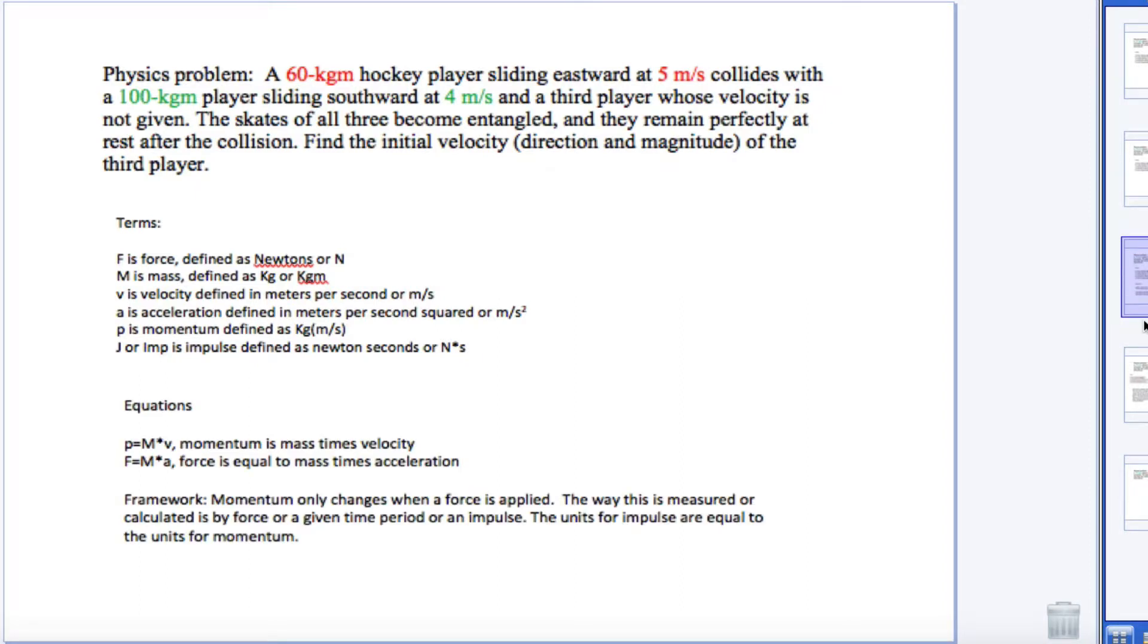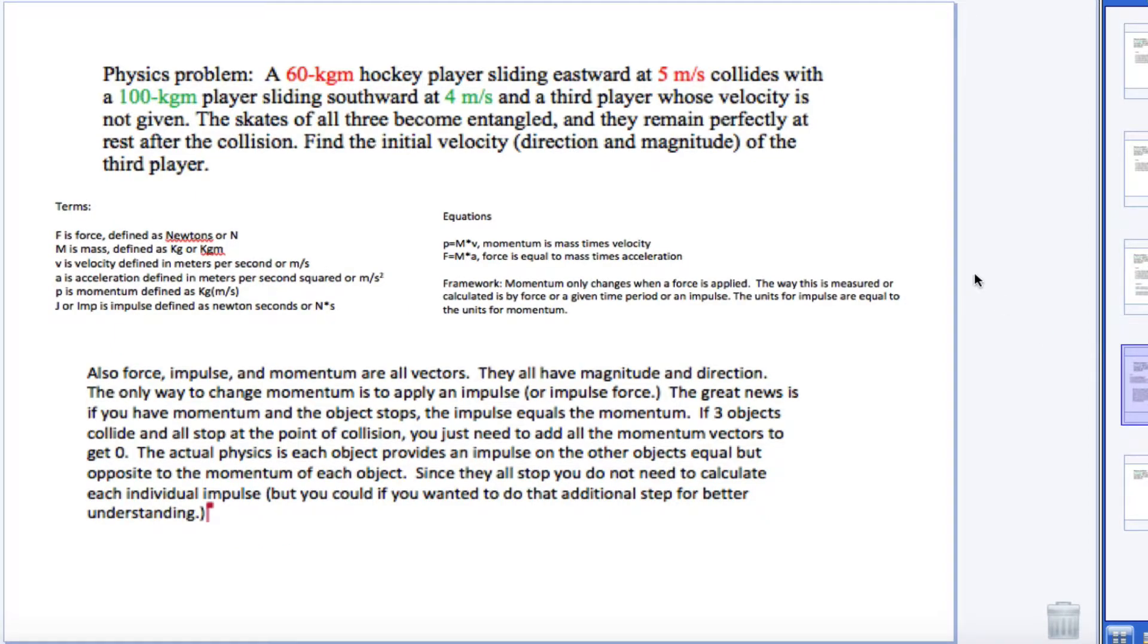And the next thing we're going to do is look at some equations. Momentum is mass times velocity, so with both of the initial skaters we have their mass and velocity, so we can calculate momentum. And then we're also going to use F equals ma. Now, force, impulse, and momentum are all vectors. They have a magnitude and a direction.